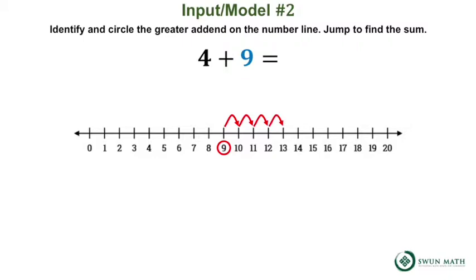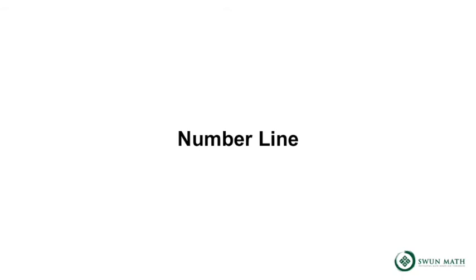We land on the number 13, which is the sum. 4 plus 9 equals 13, or 9 plus 4 equals 13 because of the commutative property of addition. And that's the video on a number line.